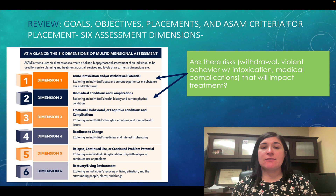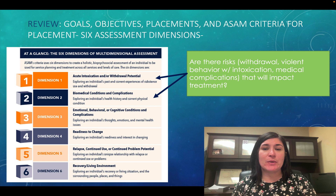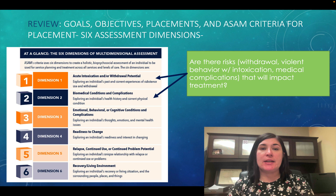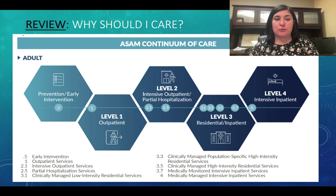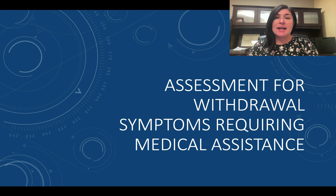Let's go back to the ASAM Six Dimensions of Multidimensional Assessment. The first two dimensions are where we're going to be focusing on risk, specifically as it relates to withdrawal risks, possible violent behaviors during intoxication, or any medical complications that could impact treatment. Dimension one and dimension two are the focus for this lecture. Remember that the higher level of care would be level four — intensive inpatient or possibly hospitalization — whereas the earliest level would be outpatient or prevention and early intervention. Some of the risk assessments we'll discuss will pinpoint which continuum of care is appropriate based on the client's risk assessment.